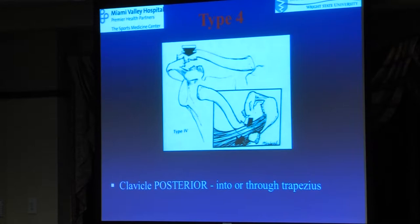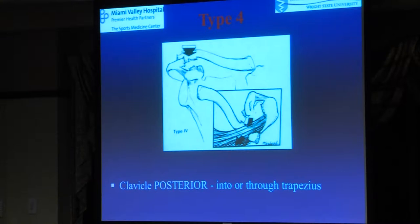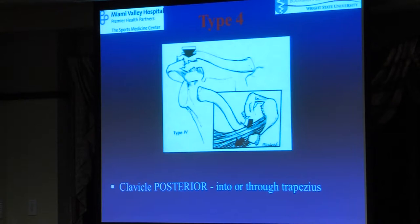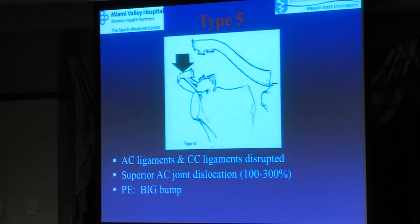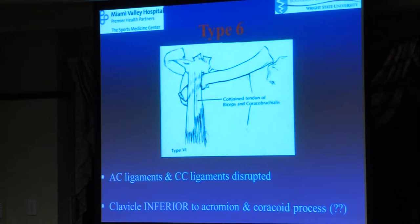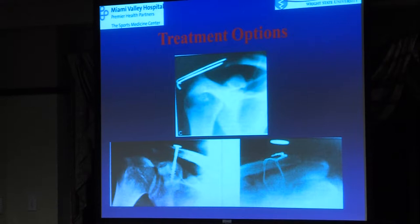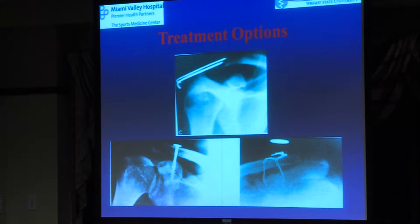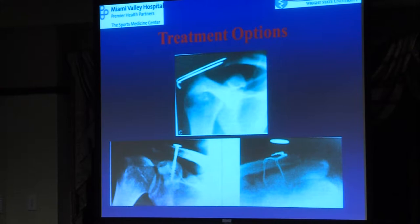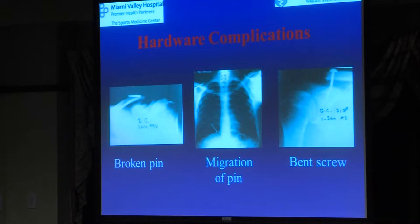Types 4, 5, and 6 are much less common. Type 4 goes posteriorly — dislocated out the back — and may not look bad on an AP x-ray, which is why you need the axillary view. Type 5s are way high, the ones that look grotesque and typically do need to be fixed. Type 6s are inferior — very uncommon, reported but rarely seen. Most AC separations don't need surgery: just a sling, anti-inflammatories, and ice. Historical fixation attempts with pins, screws, and wires have all failed — pins break, pins migrate into the chest, screws bend.